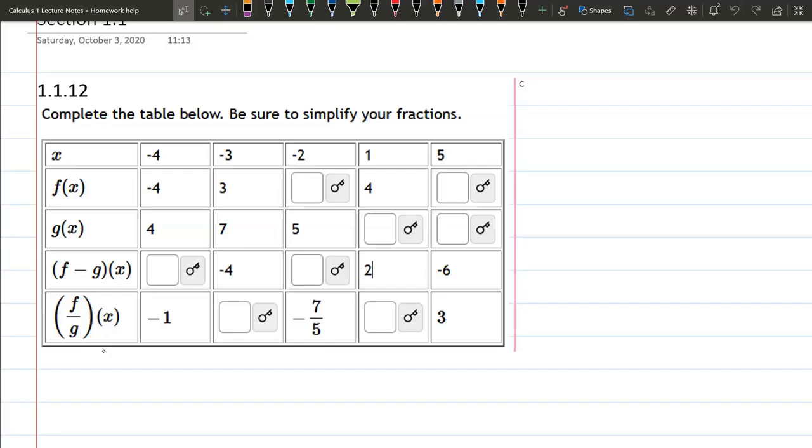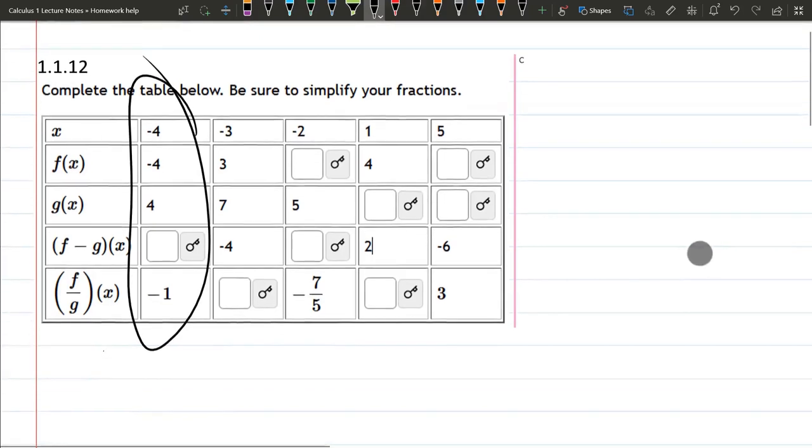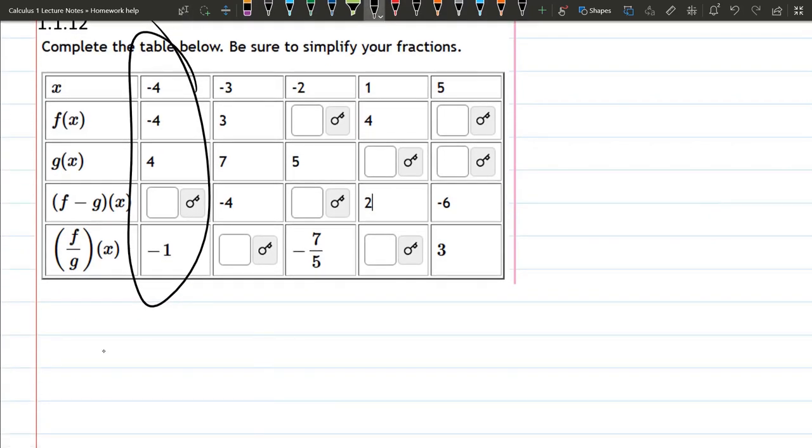This question we need to complete the table and it's actually pretty tricky to get some of these values. Let's go ahead and look at this first column here. We want to get f of g of x, in this case x is negative 4, you can see that at the top.